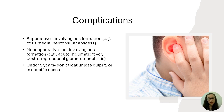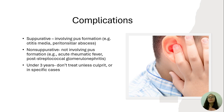That said, sometimes we do treat children under three. For instance, if a two-and-a-half-year-old is the source and keeps spreading strep to the entire family because they're untreated, then treating that child is beneficial. There are other scenarios where exceptions are made as well — treating under three is done on a case-by-case basis.